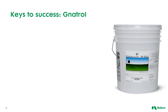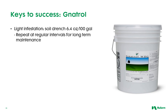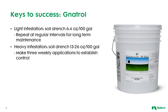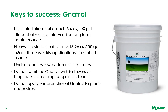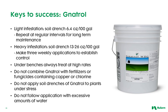Here are some keys to success when using Natrol. For a light infestation, a soil drench of 6.4 ounces per 100 gallons repeated at regular intervals will provide long-term maintenance. For heavy infestations, a soil drench of 13 to 26 ounces per 100 gallons made in three weekly applications will help establish control. For under the benches, always treat at the high rates. Do not combine Natrol with fertilizers or fungicides containing copper or chlorine. Do not apply soil drenches of Natrol to plants under stress. Do not follow application with excessive amounts of water.